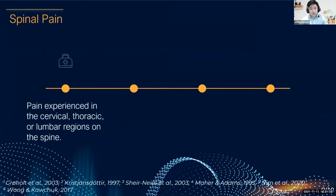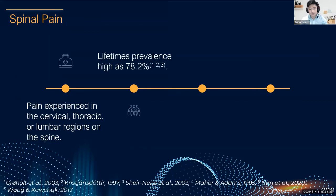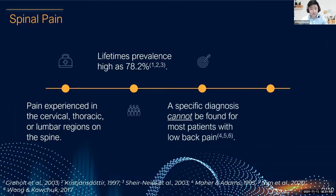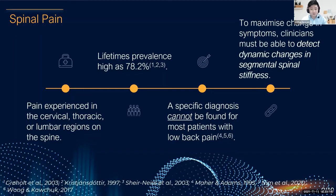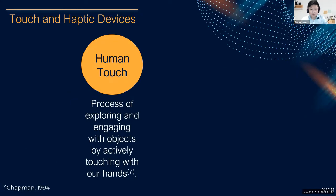Spinal pain describes pain experienced in the cervical, thoracic, or lumbar regions of the spine. Its lifetime prevalence is as high as 78.2 percent. Low back pain is a major public health problem with various potential etiologies due to the complex anatomy and function of the spine. Doctors can order medical imaging when a specific pathology such as spinal canal stenosis is expected, however about 90 percent of patients don't have a specific diagnosis — termed non-specific. Since a clear anatomical cause cannot be found for most patients, assessment and treatment rely on the pattern of findings in the physical assessment.